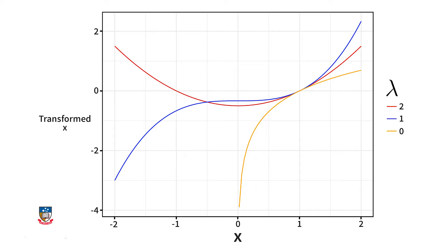In this figure, you'll see the relationship between x and transformed x for lambda equal to 0, 1, and 2. Notice how when lambda equals 0, the curve looks like a logarithmic curve.